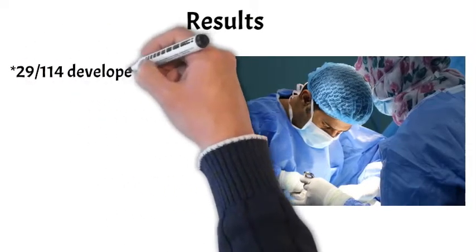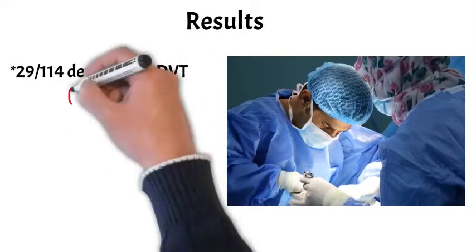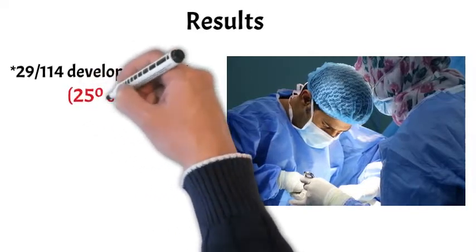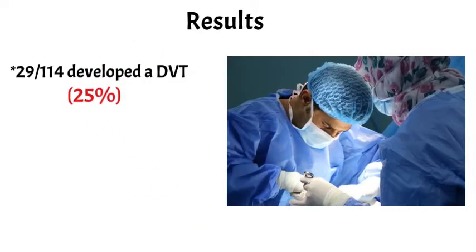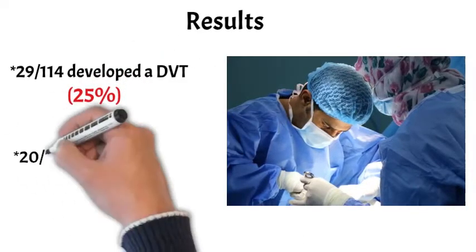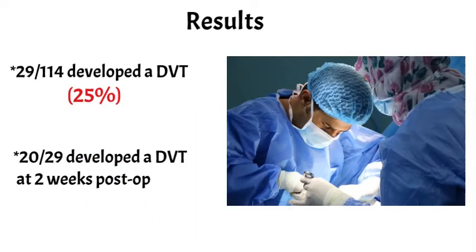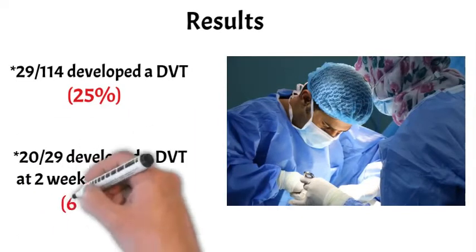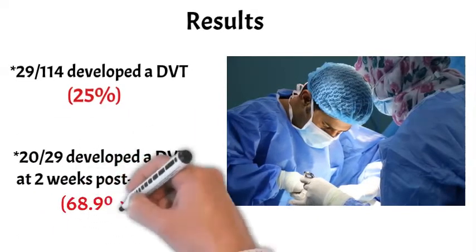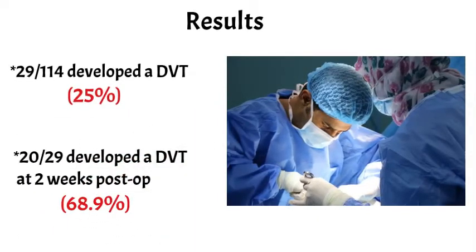The results were really interesting and useful to know if you're going to have foot and ankle surgery. At least 25% of patients — 29 out of 114 — developed a DVT, which is a deep vein thrombosis, basically a clot in the lower leg. 20 out of those 29, or two-thirds, developed it at the two-week mark rather than six weeks — pretty high and somewhat alarming numbers.